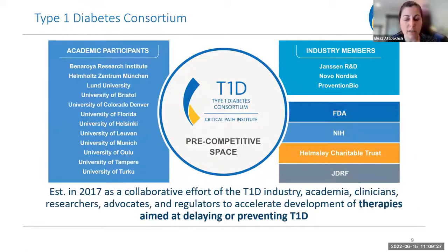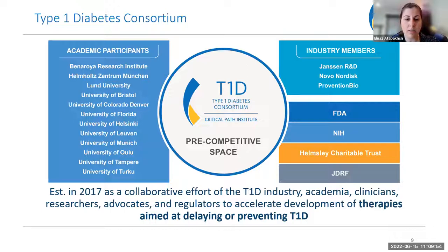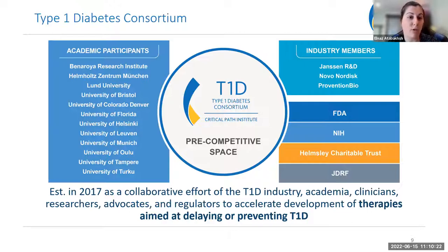Taking into account the significant challenges and patient needs, in 2017 CPATH formed the Type 1 Diabetes Consortium to advance therapeutic development, particularly focusing on disease prevention, and has since expanded to include therapies that delay disease progression. The consortium acts as a collaborative public-private partnership bringing together the T1D community across industry, academia, clinicians, regulatory agencies, and patient advocates to provide data support, scientific advisory guidance, and support for regulatory filings.